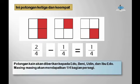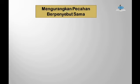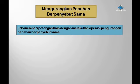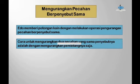Potongan kain akan diberikan kepada Edo, Beni, Udin, dan Ibu Edo. Masing-masing mendapatkan 1/4 bagian persegi. Mengurangkan pecahan berpenyebut sama: Edo memberi potongan kain dengan melakukan operasi pengurangan pecahan berpenyebut sama. Cara untuk mengurangkan dua pecahan yang sama penyebutnya adalah dengan mengurangkan pembilangnya saja.